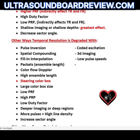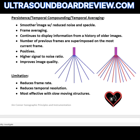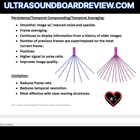Temporal resolution is also degraded by persistence, which is also called temporal compounding and temporal averaging. Persistence improves image quality by increasing the signal-to-noise ratio, smoothing the image, and reducing noise and speckle. It functions by displaying a history of older images through frame averaging — previous frames are superimposed on the most current frame. The drawback is that it reduces frame rate and temporal resolution, and it is only effective for slow-moving structures.